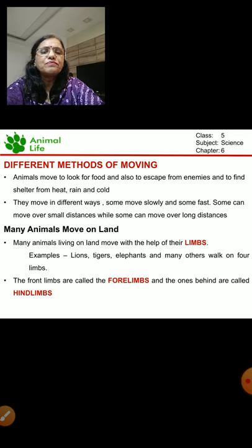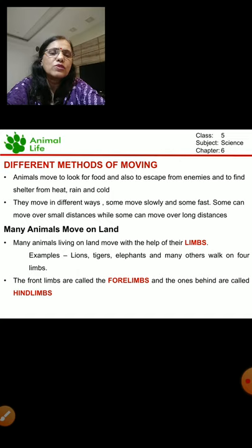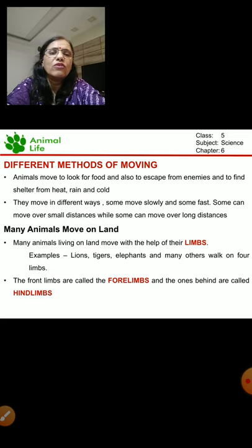They move in different ways. There are different animals and they move in different ways. Some move slowly, some move fast, some can move over small distances, some can move over long distances. Different animals are living in different habitats, so their way of movement is also different.